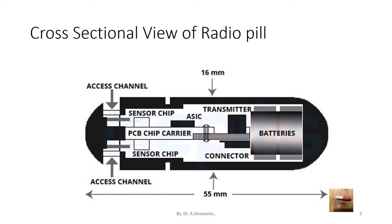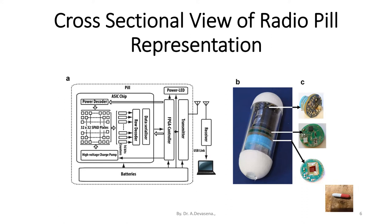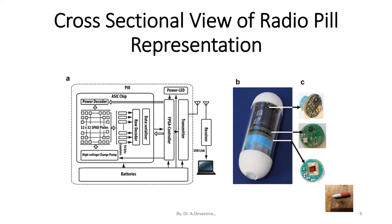Batteries' location is also indicated. In another cross-sectional view, Figure A represents the cross-sectional view showing the position of the batteries, transmitter, controller, LED, and ASIC chip that are available, and the receiver is connected outside. The transceiver comprises a transmitter as well as a receiver linked together through a radio link, with a USB link connected between the transmitter and the receiver. Figures B and C represent the interior portions of the radio pill.